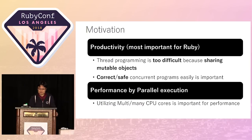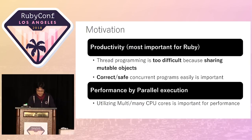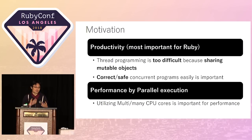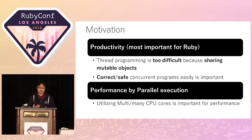Ruby is a very productive language, and I believe we can make concurrent programs very easily. I want to achieve such productivity. The second motivation is performance through parallel computing. Your computer has many cores, and we need to utilize those cores, but current MRI cannot provide a way to utilize many cores.